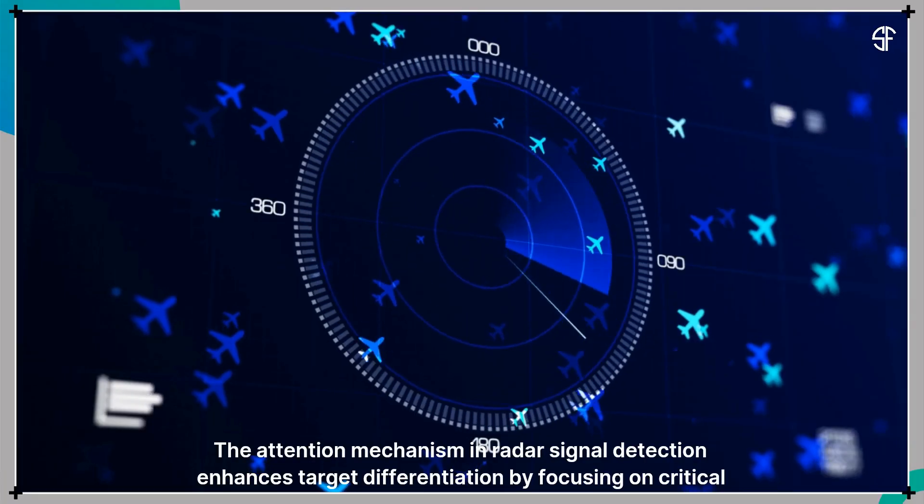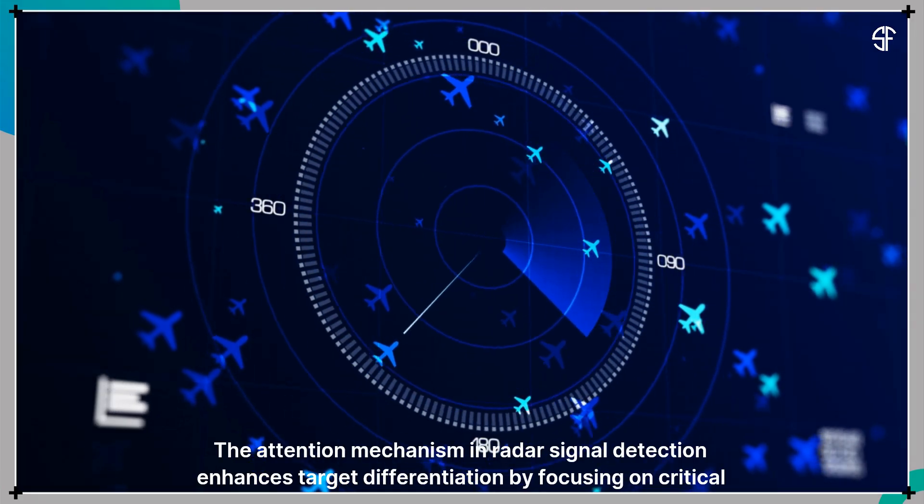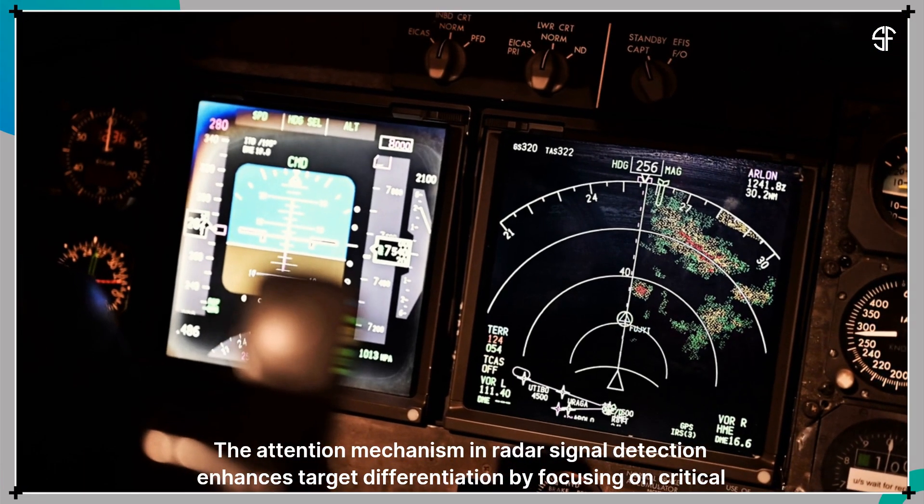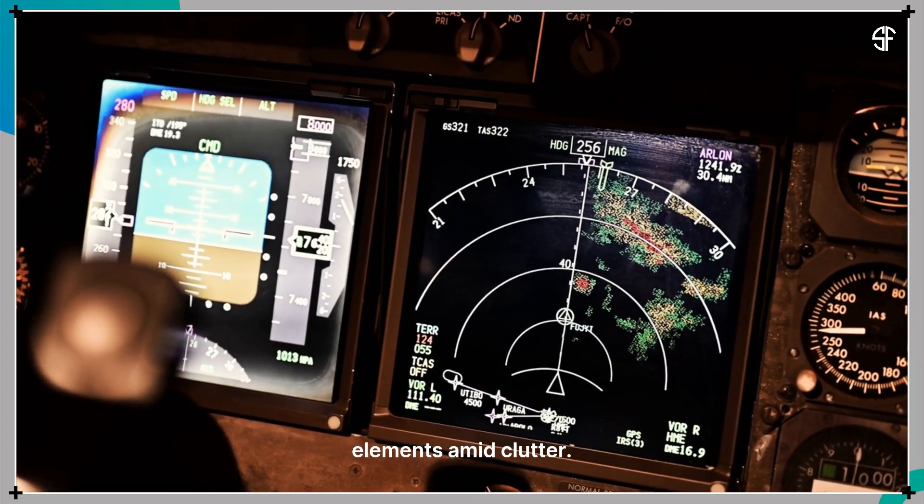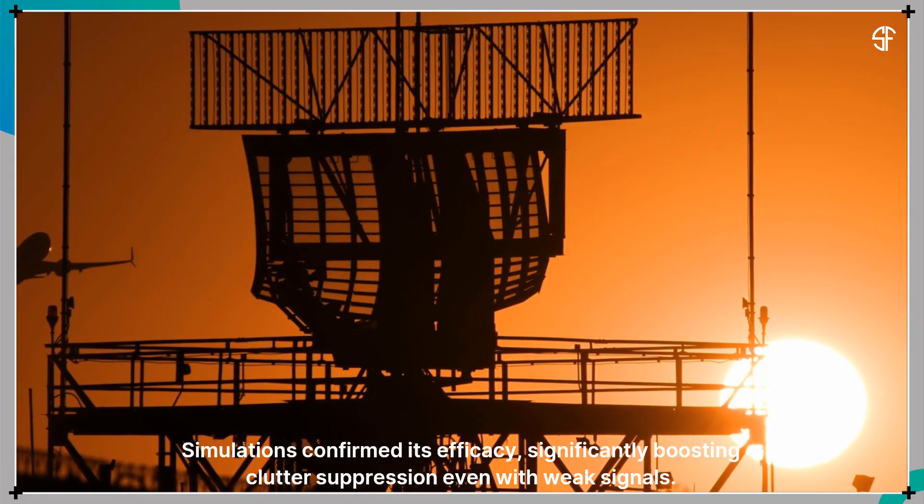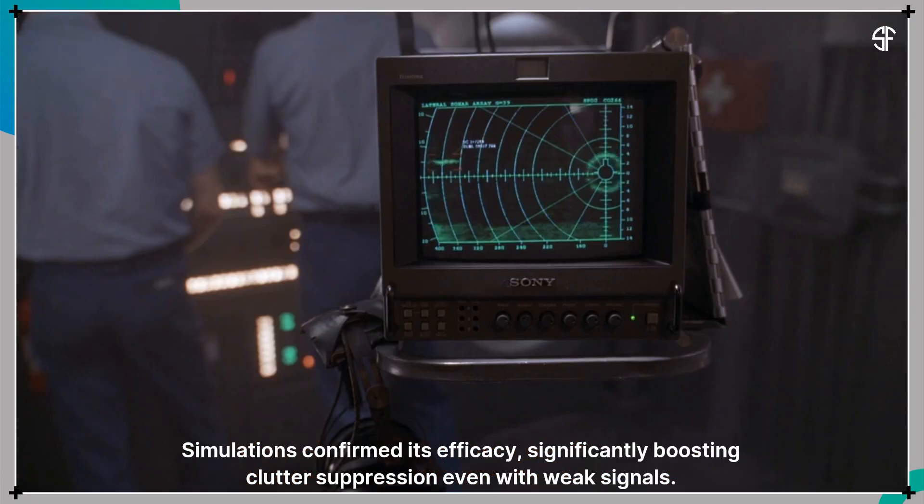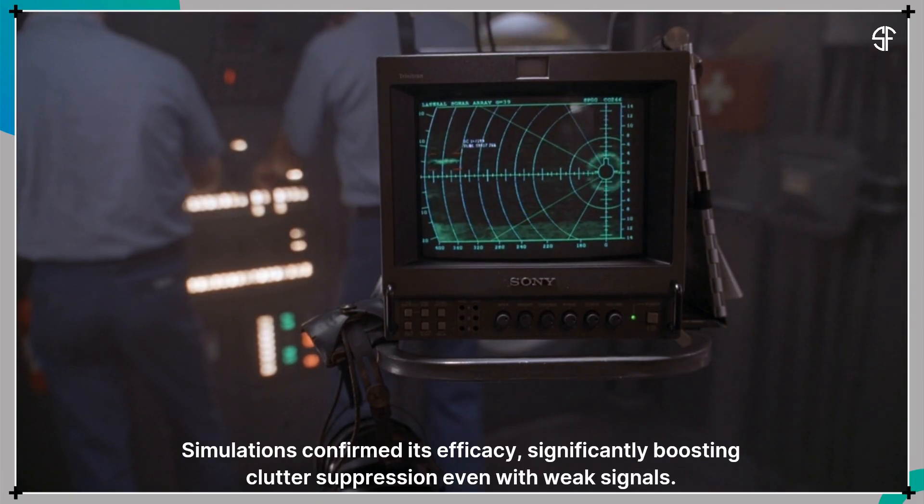The attention mechanism in radar signal detection enhances target differentiation by focusing on critical elements amid clutter. Simulations confirmed its efficacy, significantly boosting clutter suppression even with weak signals.